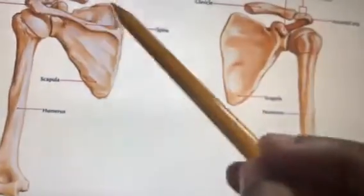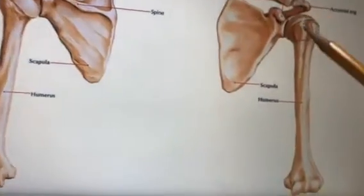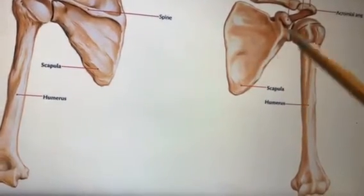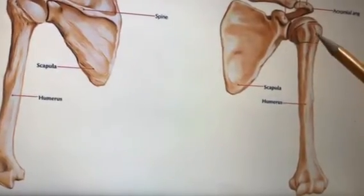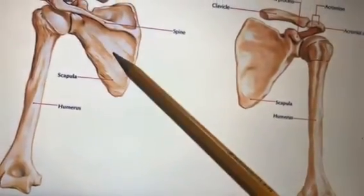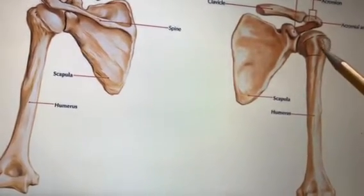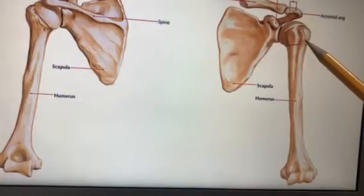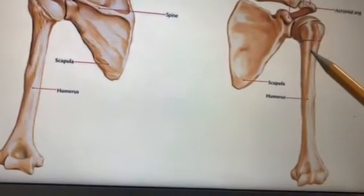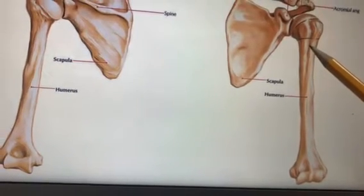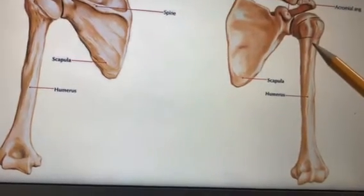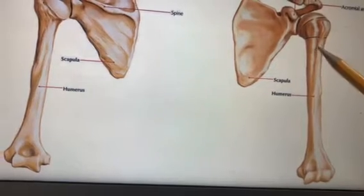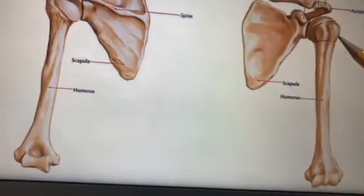Now, where do the SITS muscles insert? Here you can see the greater tubercle and the lesser tubercle. The subscapularis goes to the lesser tubercle — remember, 'sub' goes to the lesser. Supraspinatus, infraspinatus, and teres minor all go to the greater tubercle — 'in the great place only you can sit.' Do not confuse teres major with teres minor. Teres major goes to the medial lip of the intertubercular sulcus, while pectoralis major goes to the lateral lip. Teres major does not take part in the rotator cuff.